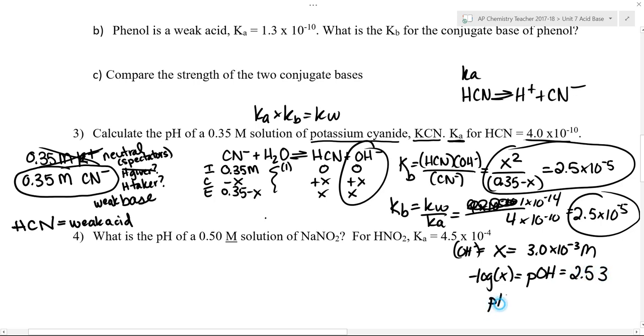And to find the pH, I'm going to use my relationship that pH plus pOH is 14. And all of these equations are on your equation sheet. I should end up with my pH being 11.47.